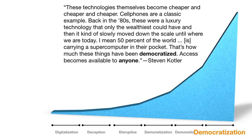The last D is democratization — in other words, access becomes available to everyone. Just about everybody on the planet has the ability to access some sort of phone that provides services such as the digital camera. It may not be the best in the world, but it certainly provides access that people wouldn't have otherwise had decades ago.